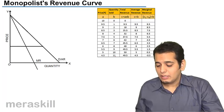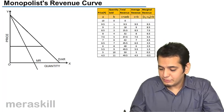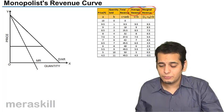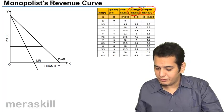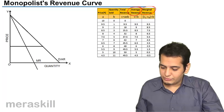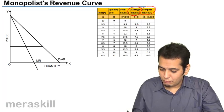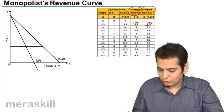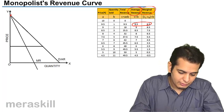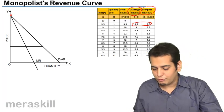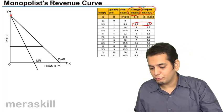Let's see how average revenue and marginal revenue look on a graph and try to derive them. You can see both of them start off from the same point — this would be the point from where they would be starting.